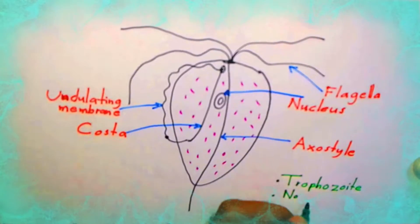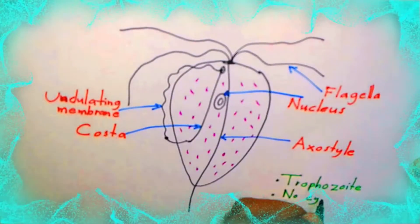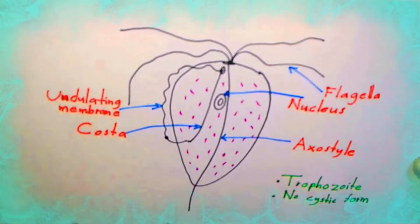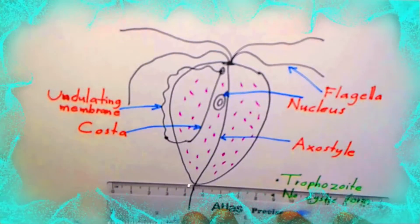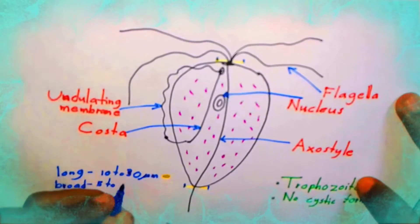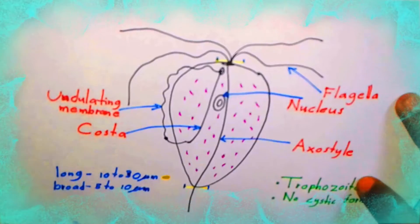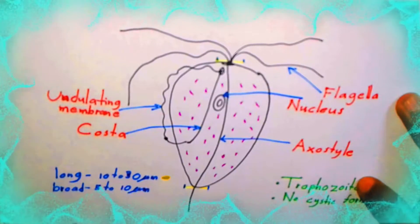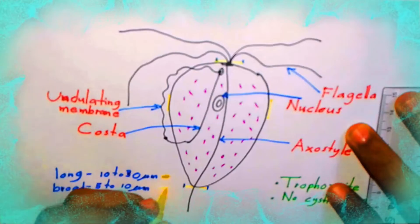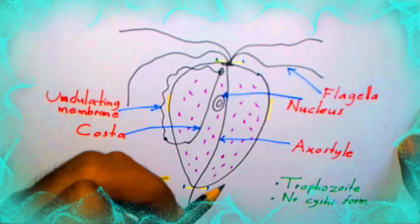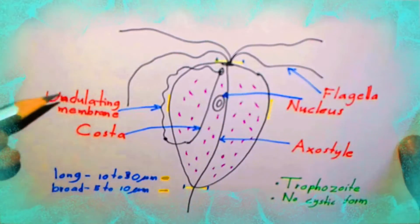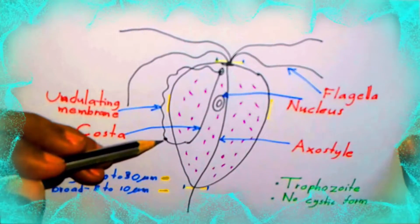Trichomonas vaginalis occurs only as the trophozoite. There are no cystic forms in Trichomonas. The trophozoite is about 10–30 micrometers long and 5–10 micrometers broad. Trophozoites of Trichomonas vaginalis are pyriform in shape.